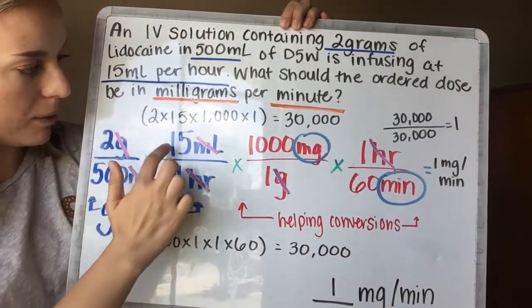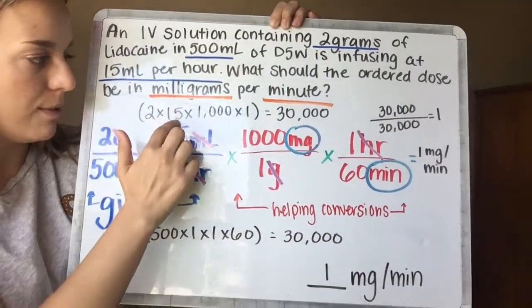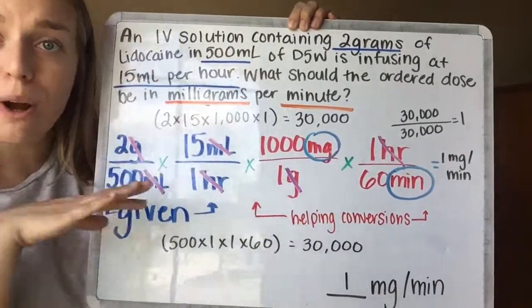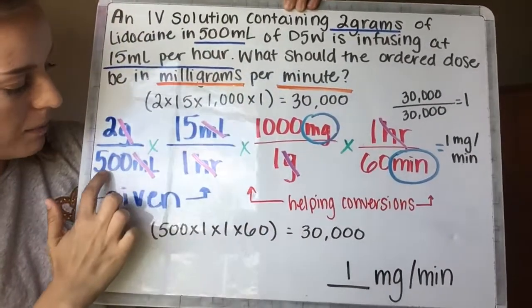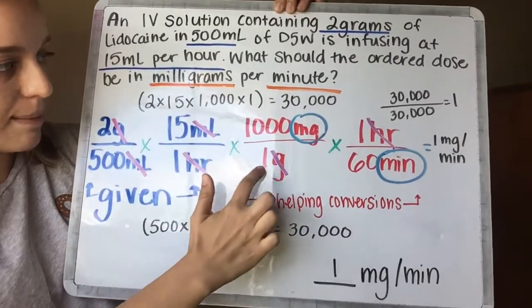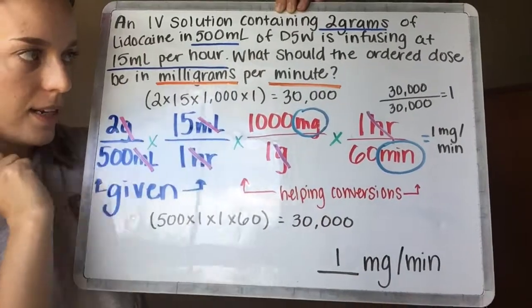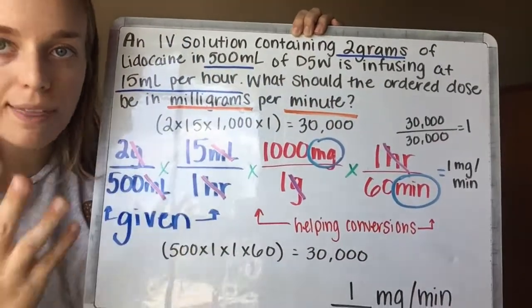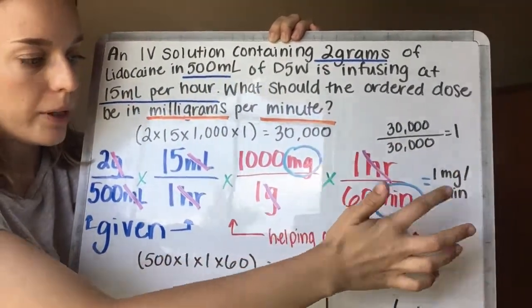So then you come up with something kind of wacky looking, like 2 times 15 times 1000 times 1, which when put in the calculator—always put in the calculator—we've got 30,000. And on the bottom we have 500 times 1 times 1 times 60. That's down here. We've got 30,000. So we put 30,000 over 30,000, we divide with a calculator, and we get 1—1 milligram per minute.